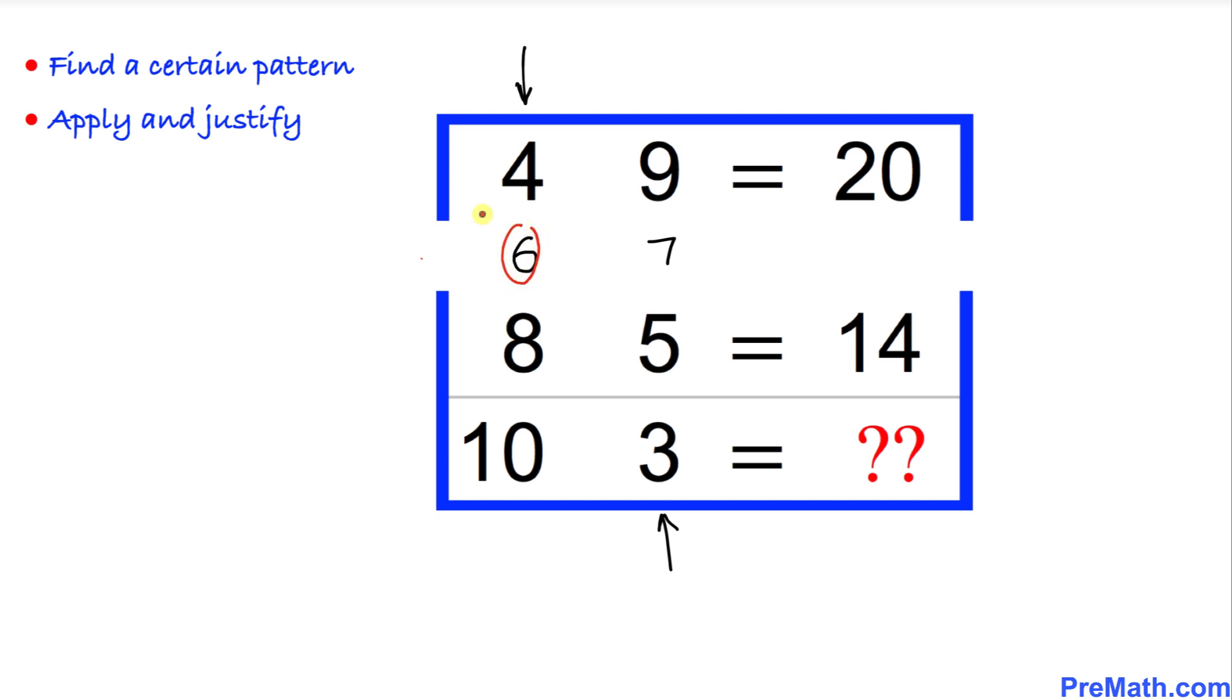Now once again, we are going to apply the same formula that we applied previously. If I divide this 6 by 2, that is going to give us 3, and at the same time I'm going to multiply 7 by 2, which is going to give us 14. So 3 plus 14 is going to give us 17 over here.